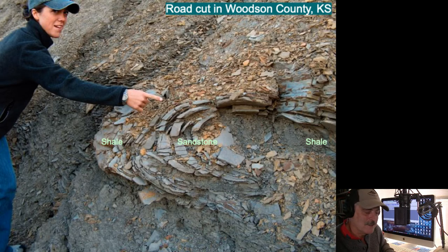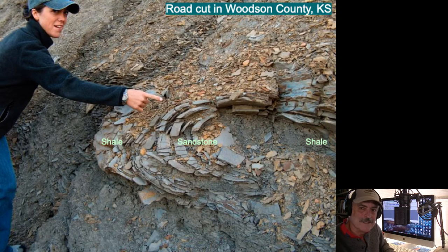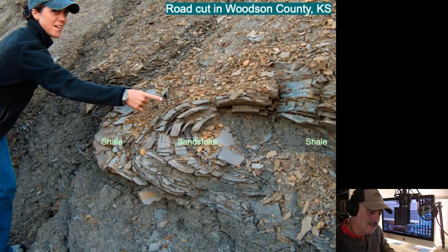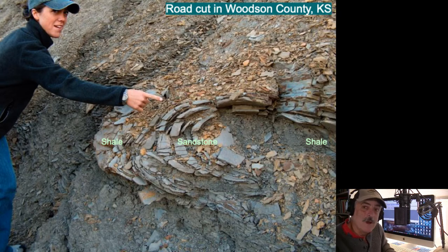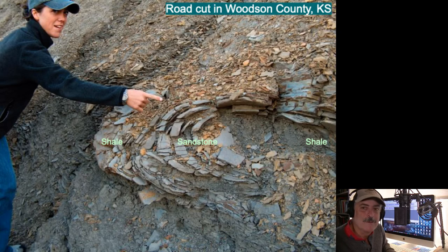A little bit south of Yates Center, about 300 million years ago that area was shallow seas, with deltas depositing sands and shale in quiet water at the end of a river that no longer exists. There is oil associated with this as well. That sort of fold we call a syn-sedimentary fold — it happened roughly at the time of deposition.